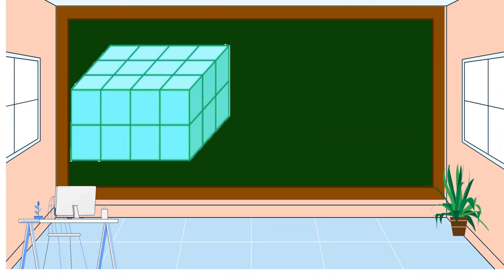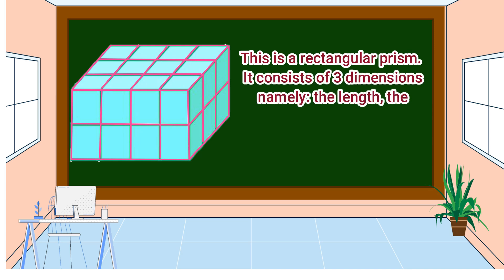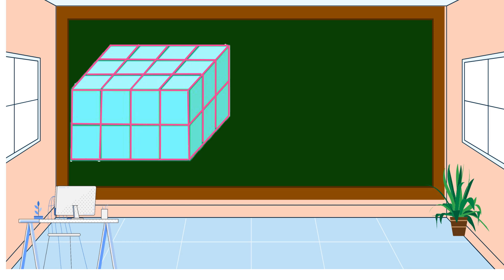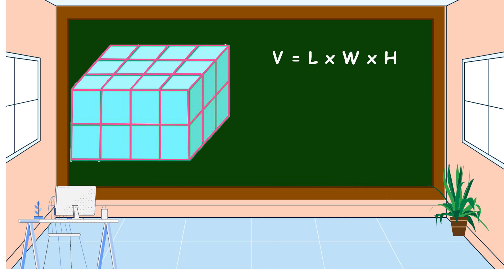If we add one dimension to a rectangle — which is the height — the result is a rectangular prism. A rectangular prism consists of three dimensions: the length, the width, and the height. To find the volume, we find the number of cubic units in the object. Volume is equal to length times width times height.